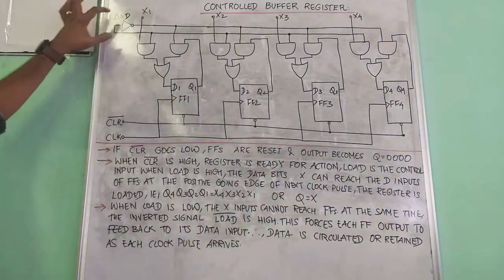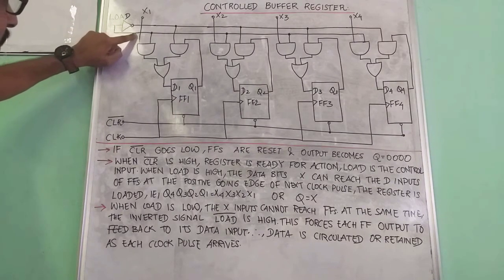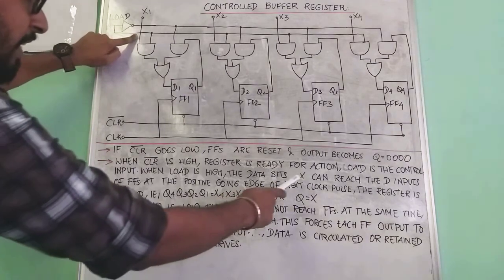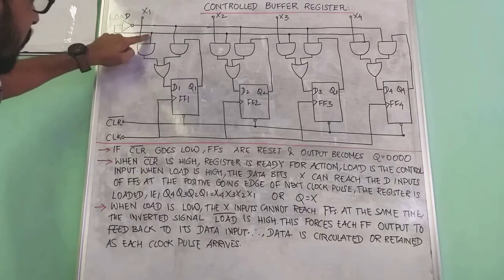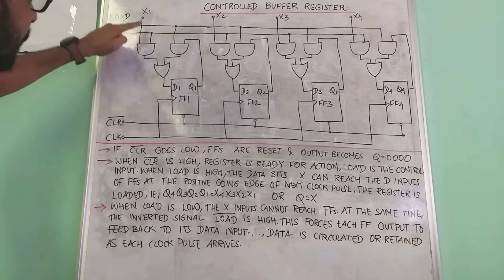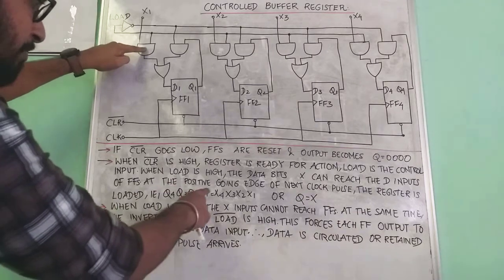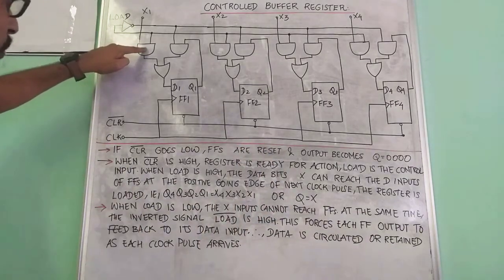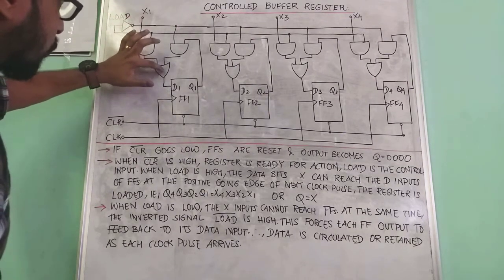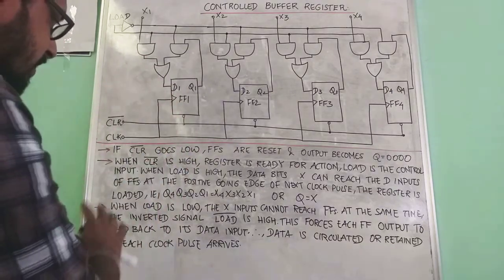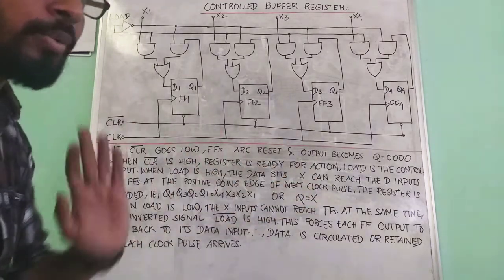Load is the control input. When load is high, the data X can reach the D inputs of the flip-flops. We have a connection from load — positive load — and from the parallel load inputs. At the positive going edge of the next clock, this case is active and goes through the OR gate and is fed to D. So Q4, Q3, Q2, Q1 equals X4, X3, X2, X1 — in general, Q equals X.